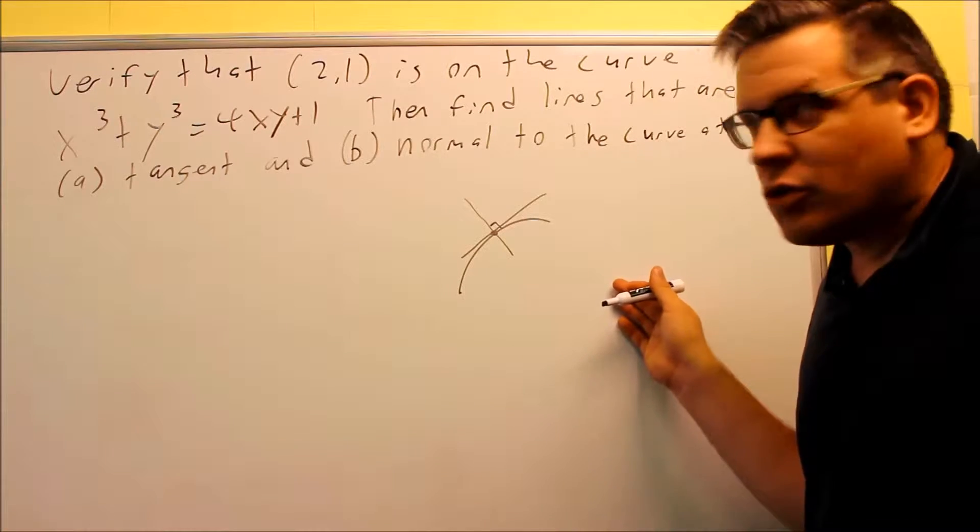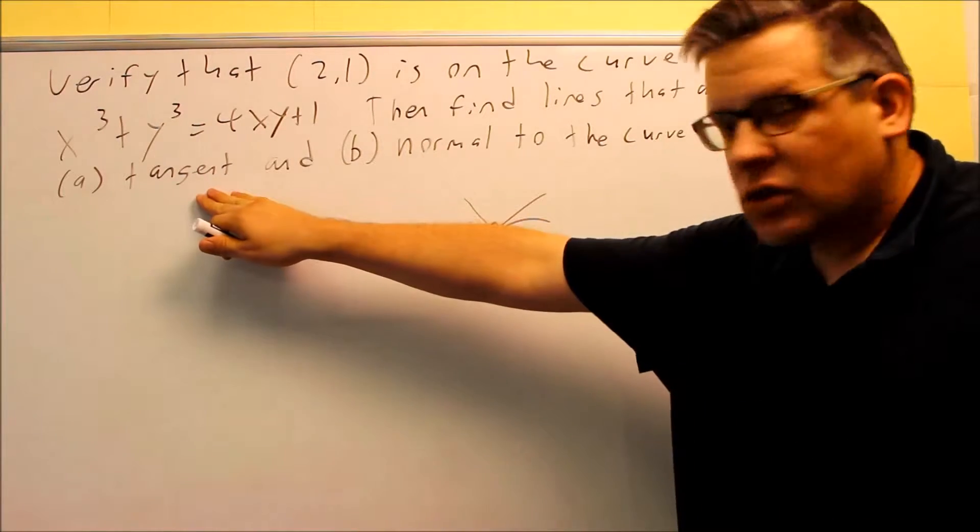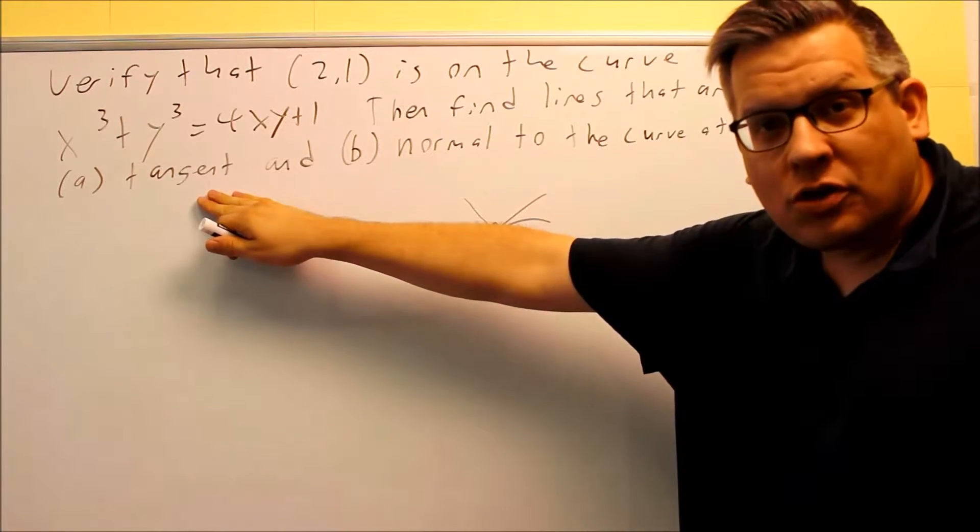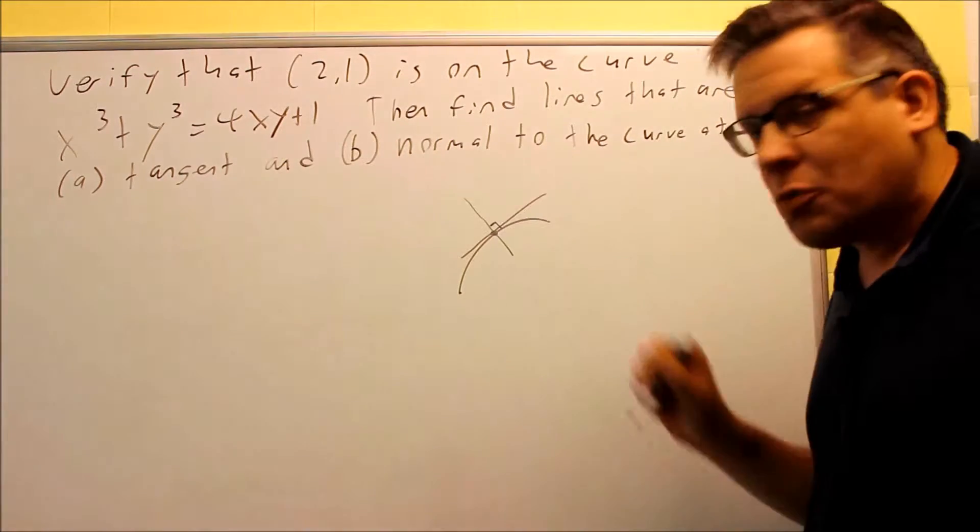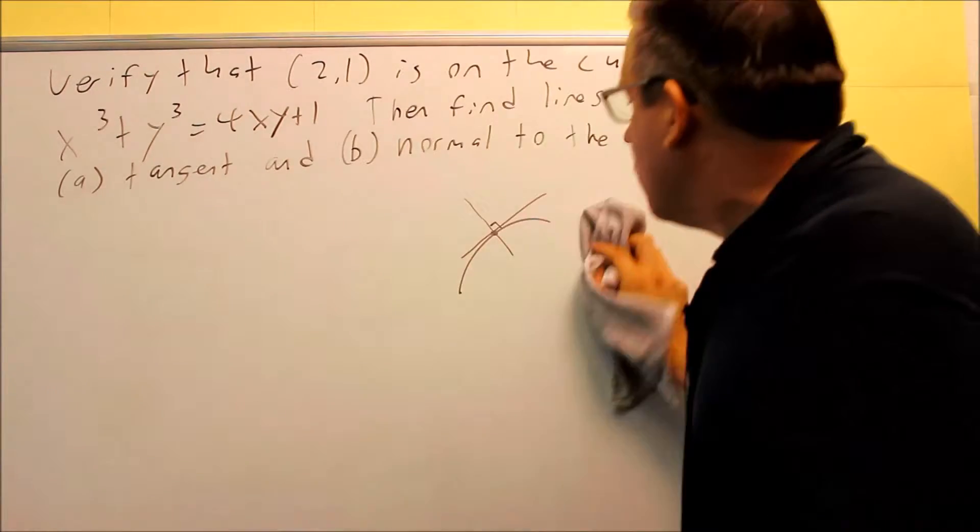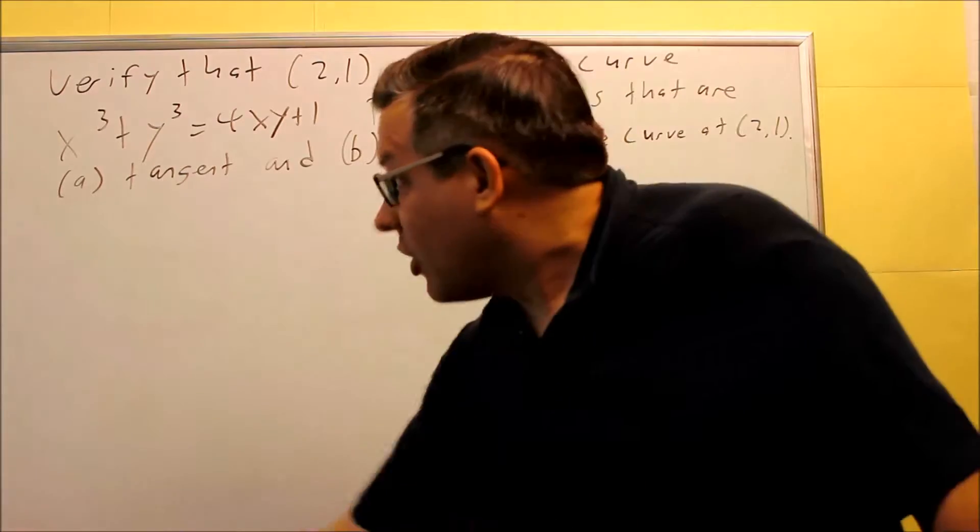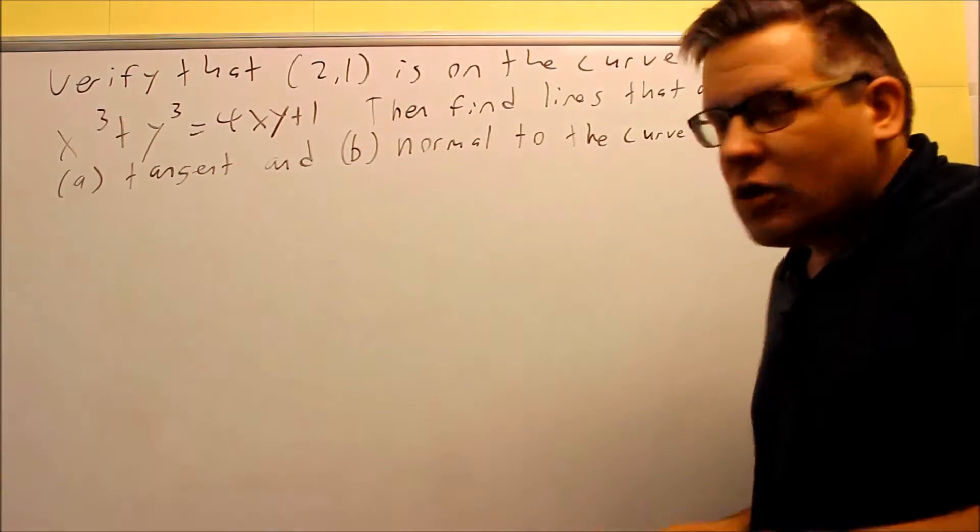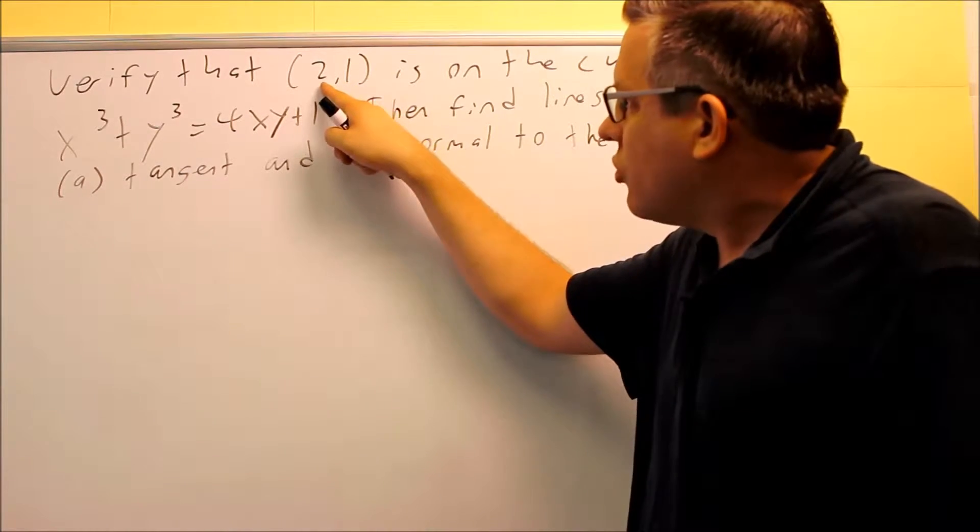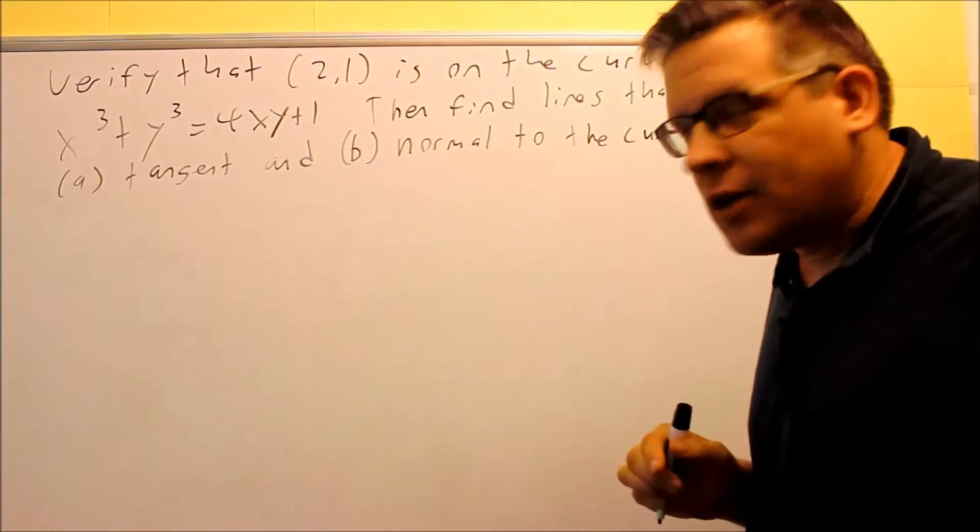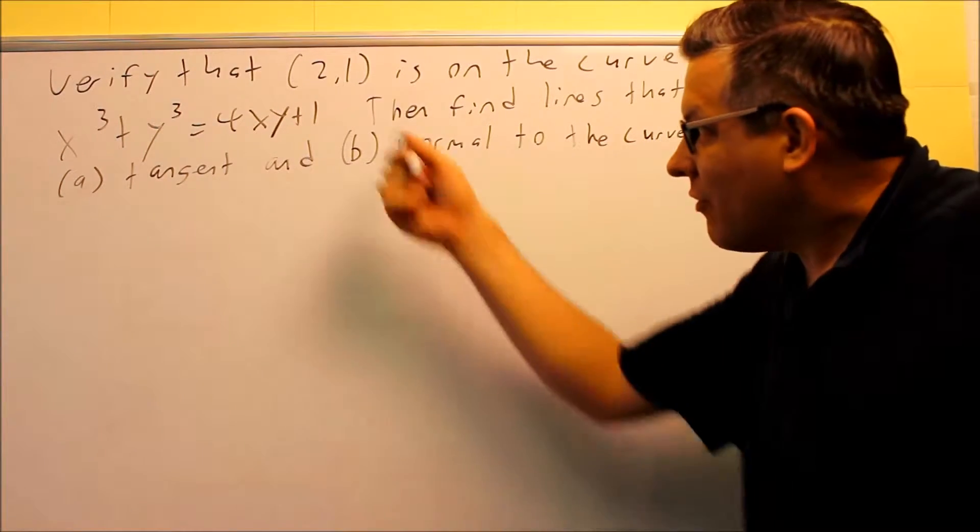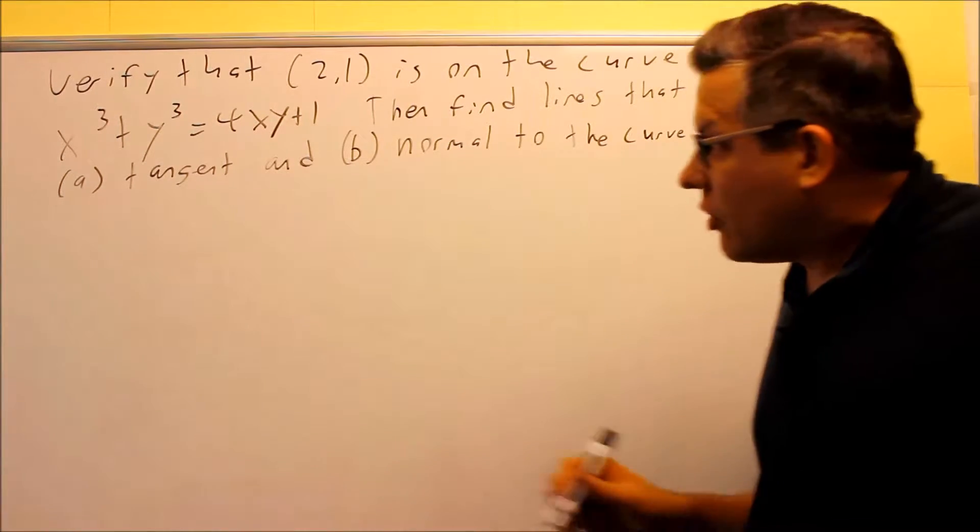So the first thing we're going to do is we need to figure out what the slope is, slope of the tangent. And then what we're going to do is, because it's normal, we want to find the slope of the line that's perpendicular to that original tangent. So the first thing we'll do is we need to verify that the point's on the curve. So in order to do that, we're just going to put 2 in for x and 1 in for y. We put that into here, and if we get the same thing on both sides of the equation, that verifies that the point's on the line.